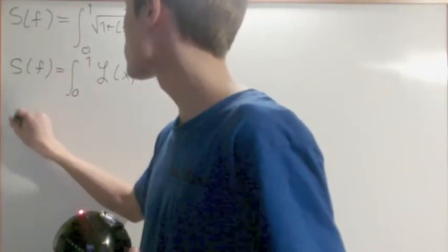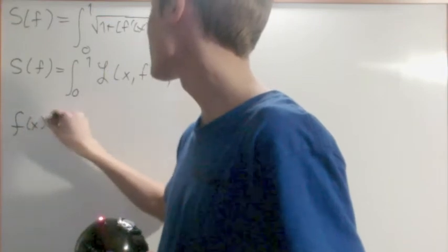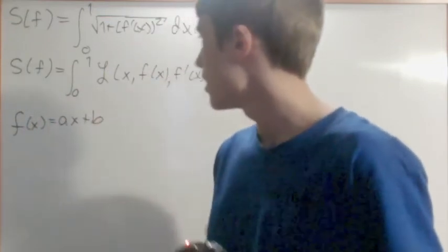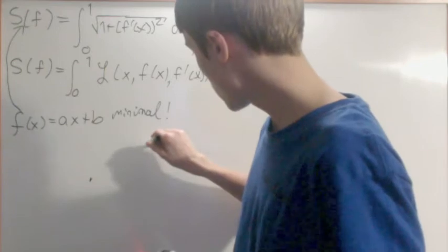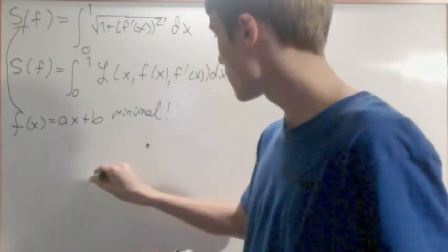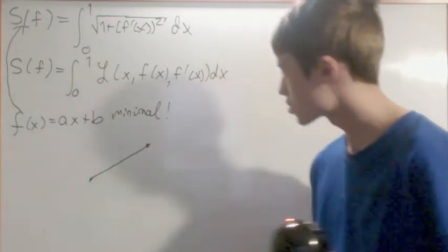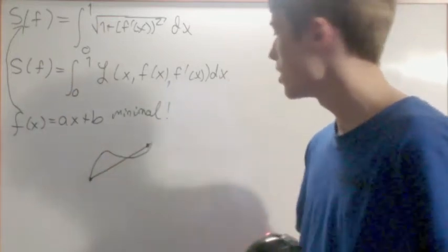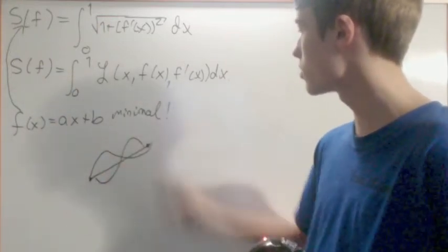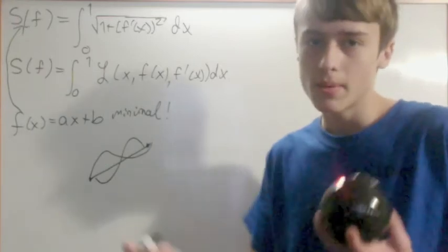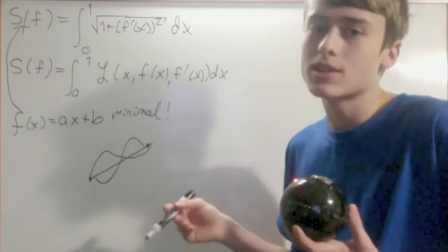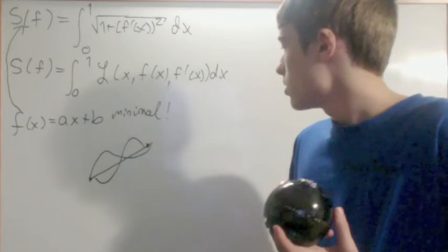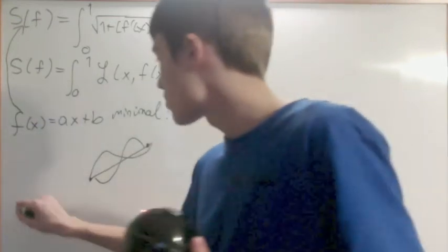For this first one, you could have f of x equals ax plus b. You might know from basic things that a line is the shortest distance between two points, because any other curve sort of deviates. But how do we rigorously prove it? That's where we use the Euler-Lagrange equations.